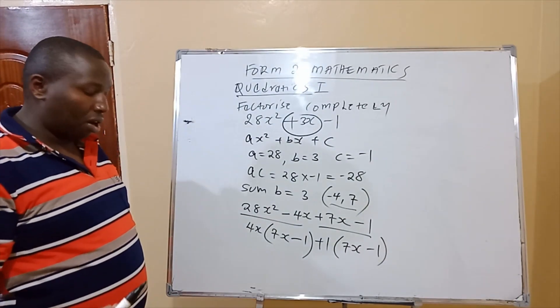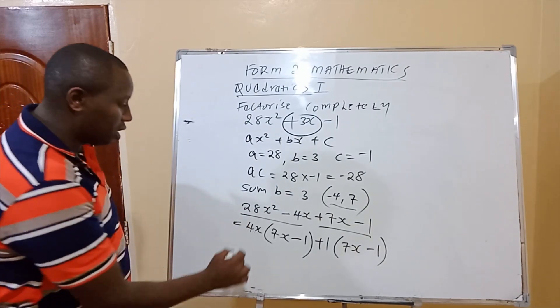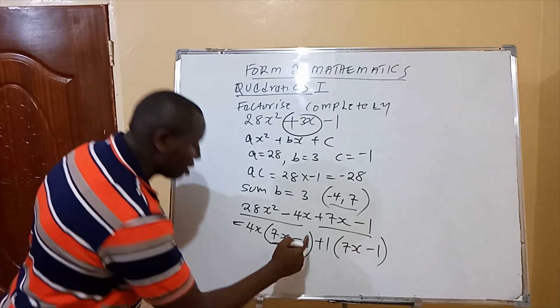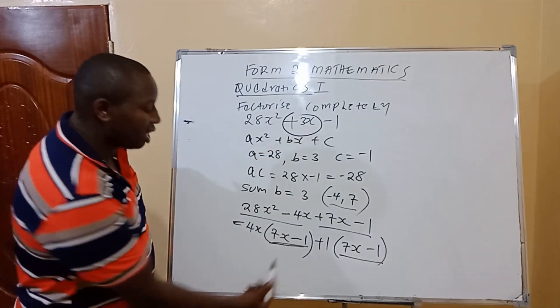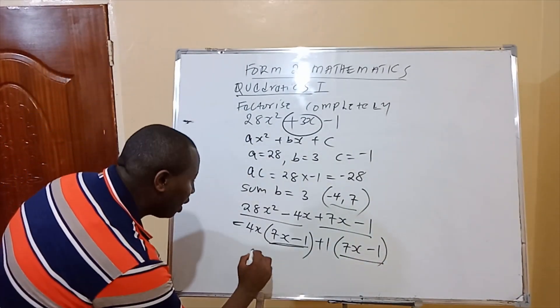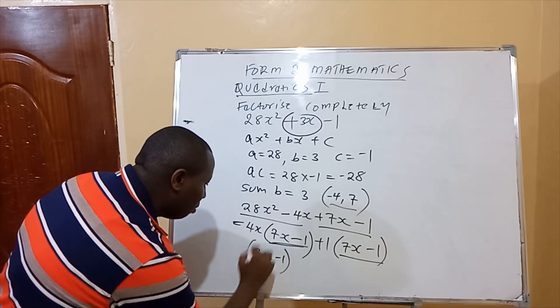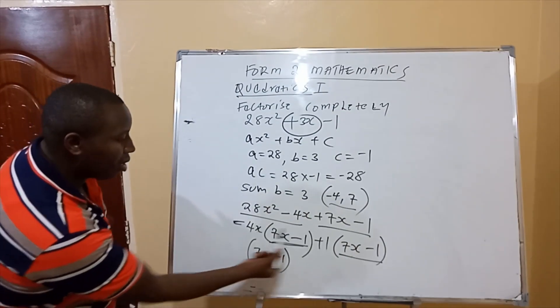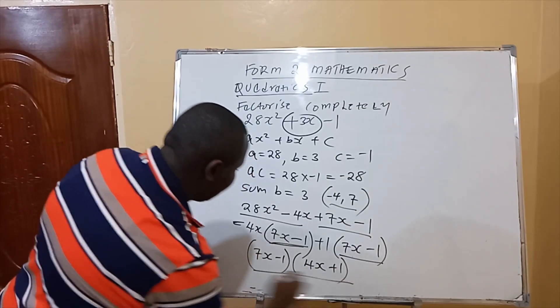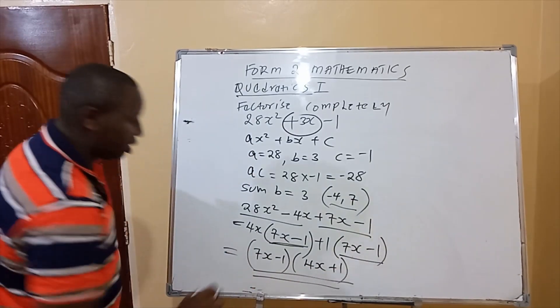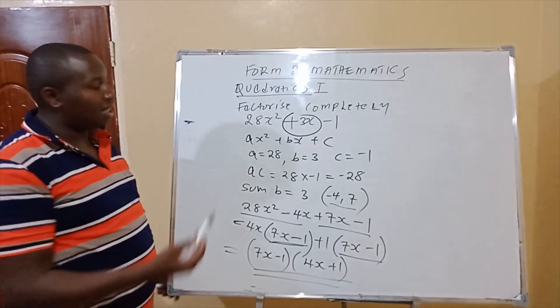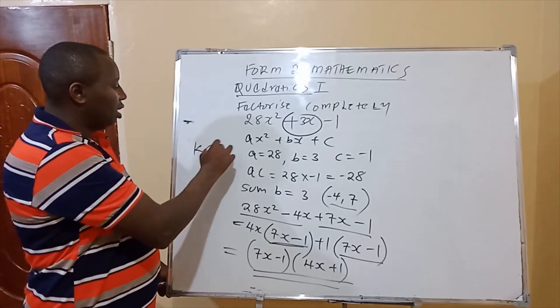So therefore, the final step, in this case, you check this is 7x minus 1, and this is 7x minus 1. So, these are factors. This one is equal to this. So, you pick one of the factors. You pick 7x minus 1, because there are 2. And then, this is 4x plus 1. You write 4x plus 1. And these are the factors. You have factorized. And that's how to factorize. And this is a KCSE question.